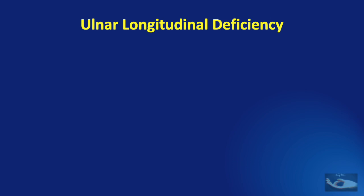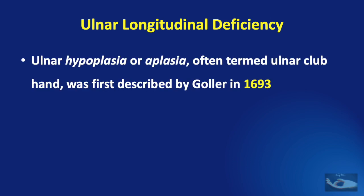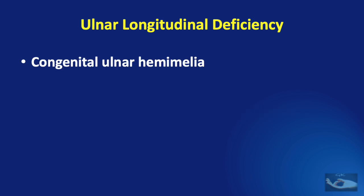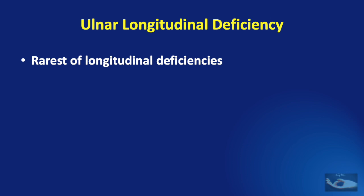Ulnar longitudinal deficiency, sometimes known as Ulnar hypoplasia or aplasia and sometimes even Ulnar club hand, was first described by Goller in 1693. It refers to partial or complete failure of formation of the Ulna. It has also been known by the names congenital Ulnar hemimelia, or Ulnar ray deficiency. It is the rarest of the congenital longitudinal deficiencies.